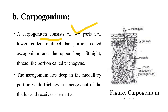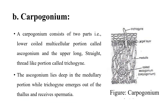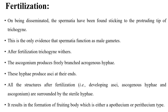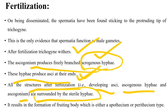The carpogonium consists of two parts: the coiled ascogonium, which lies deep in the medullary portion, and the elongated trichogyne, which emerges out of the thallus and receives spermatia. Spermatia fuse with the ascogonium to form the zygote. Evidence shows spermatia function as male gametes by adhering to the protruding tip of the trichogyne. After fertilization, the trichogyne withers, and the ascogonium produces freely branched ascogenous hyphae, which produce asci at their ends.